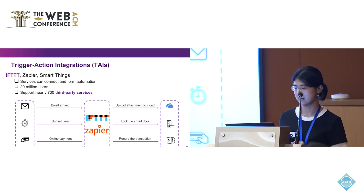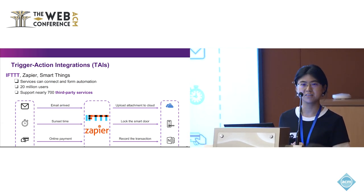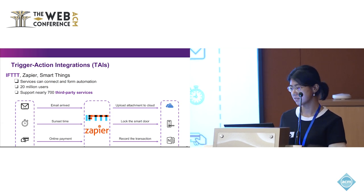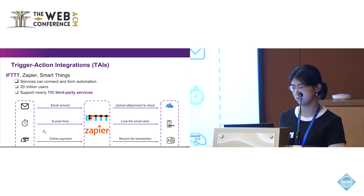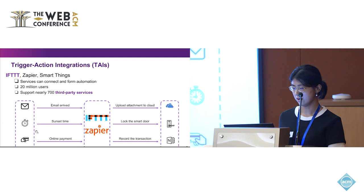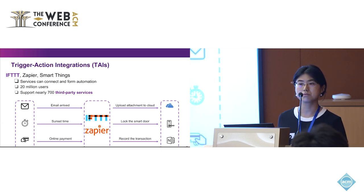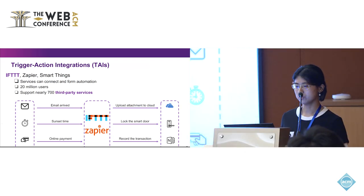Taking IFTTT as an example, it has over 20 million users and supports nearly 700 third-party services. Some examples: when a new email arrives, the TIE can help you upload the attachment to OneDrive cloud. When a scheduled time occurs, the TIE can lock or unlock your smart doors. And every time an online payment happens, it can record the transaction.